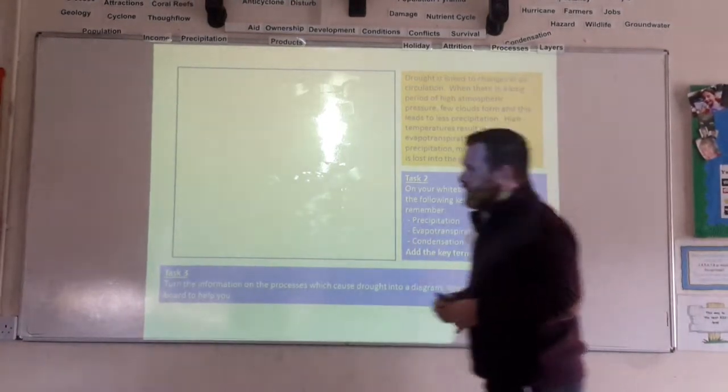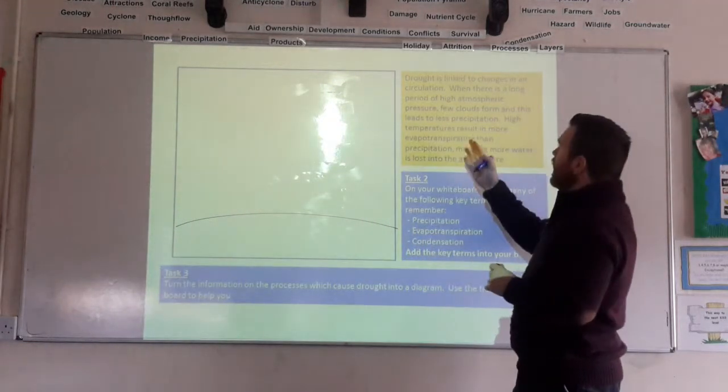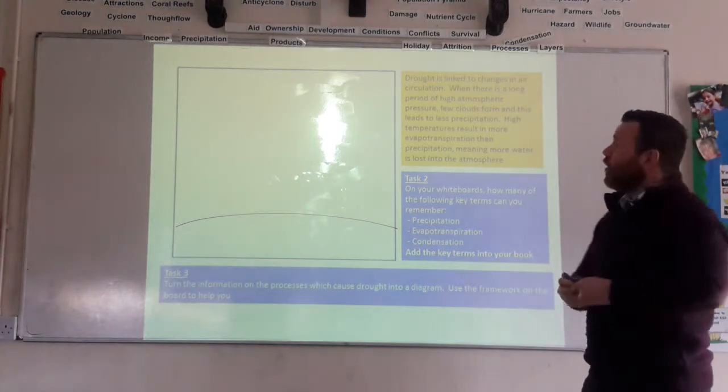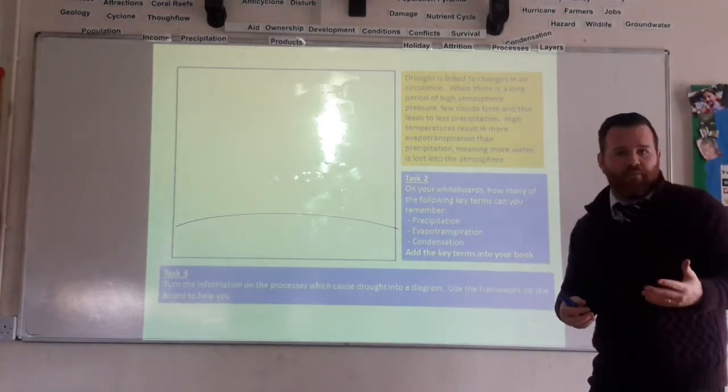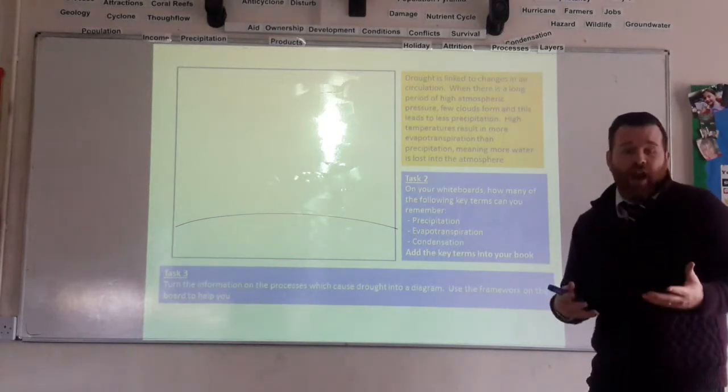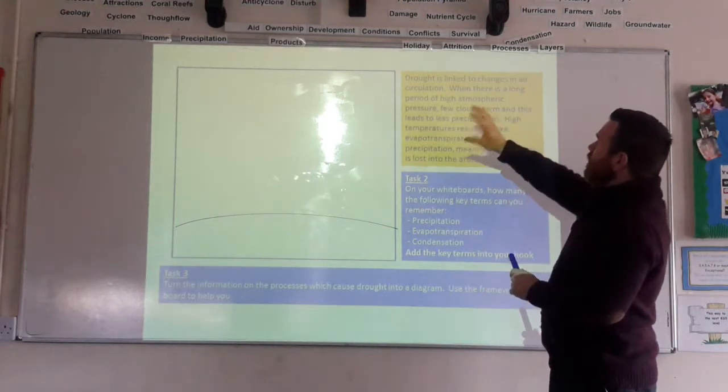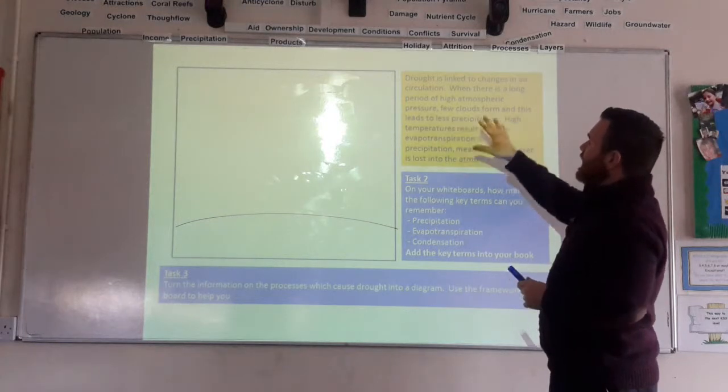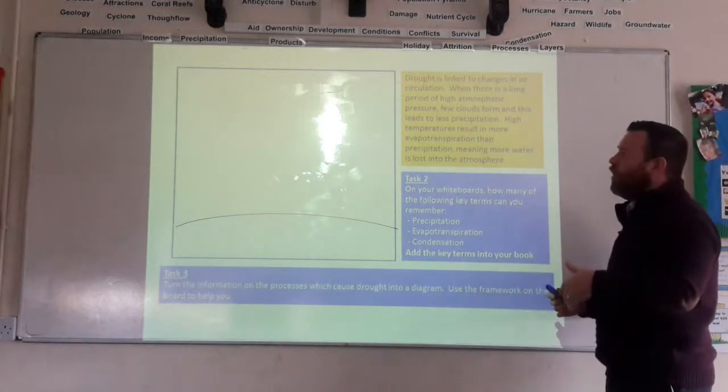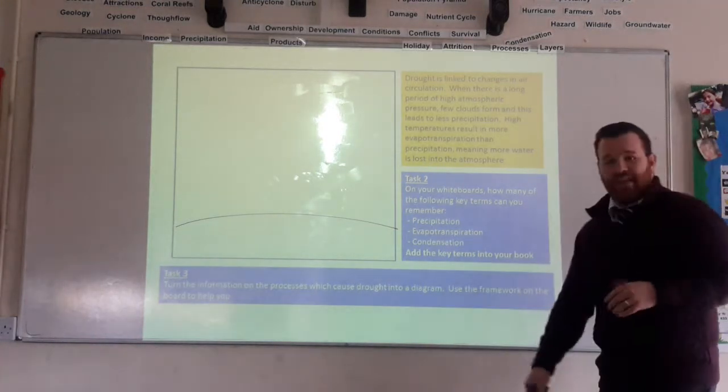Causes of drought. If we use a little diagram to think about what we're saying, drought occurs when there is a change in air circulation, usually when we get a long period of high atmospheric pressure. High atmospheric pressure basically means hot, dry air. When we get hot, dry air, basically we end up with few clouds forming which leads to less precipitation. When we get less precipitation, those higher temperatures result in more evapotranspiration than precipitation, meaning more water is lost into the atmosphere.